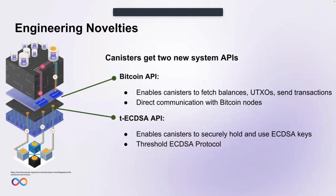Let's talk about why no other blockchain has built this direct integration yet. There were two technical hurdles to overcome. The first is a protocol-level integration of the Internet Computer with the Bitcoin network, meaning replicas directly communicate with Bitcoin nodes, allowing canisters to fetch balances, UTXOs, and send transactions. The second was the development of a protocol suite for chain key ECDSA signatures, including protocols for threshold ECDSA signing, key generation, and public key retrieval. Both novelties are now available through the management canister API.